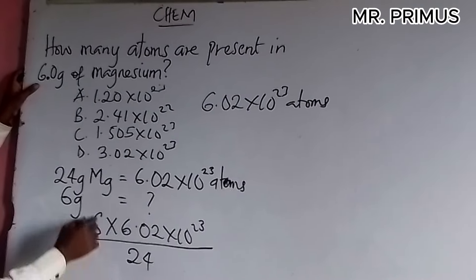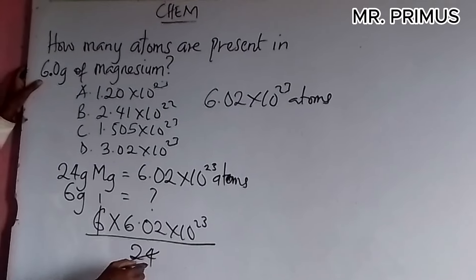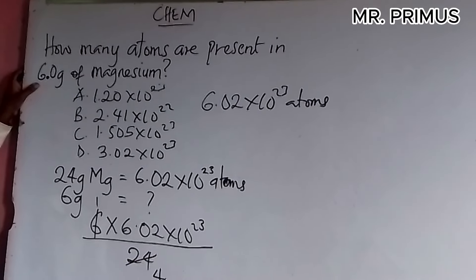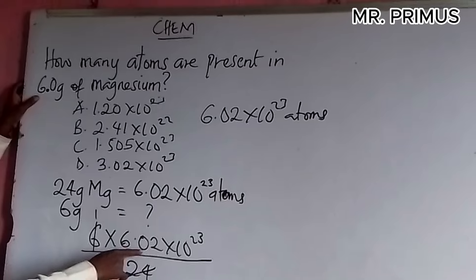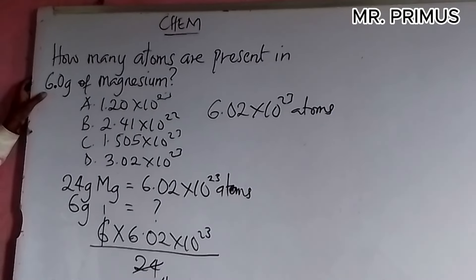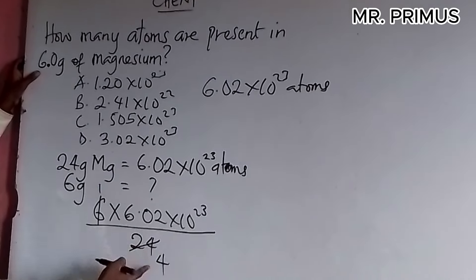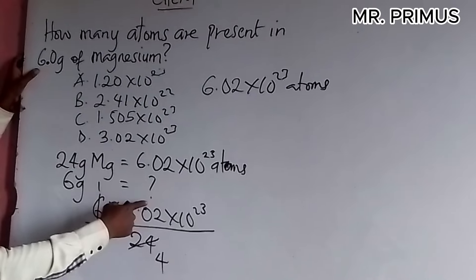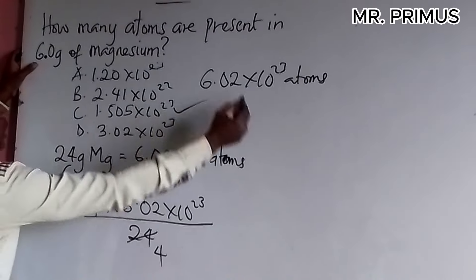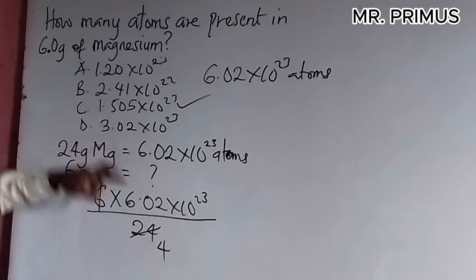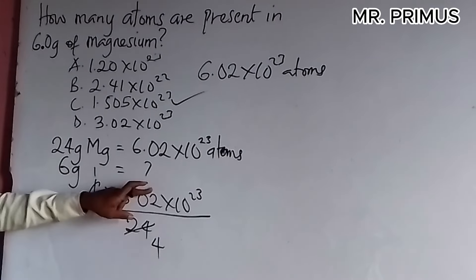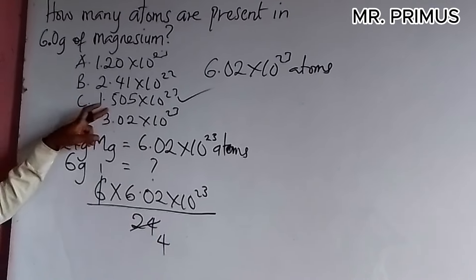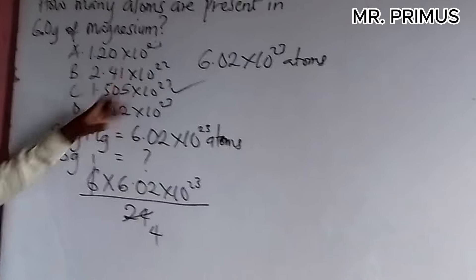So, we do it 6 times 6.02 times 10 raised to power 23. It is 23 here. All over 24. All over 24. So, 6 in 24 is 4. So, 4 divided by 6.02 will give you 1.505. So, this is the correct one: 1.505.